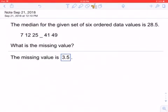Okay, so this is a tricky median question. Let's go ahead and read this. The median for the given set of six ordered data values is 28.5, and we have some values here with a missing value.